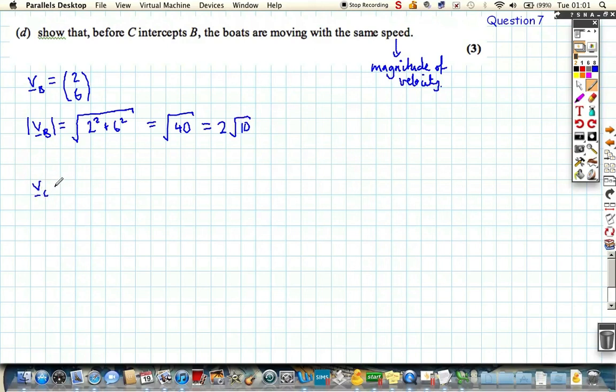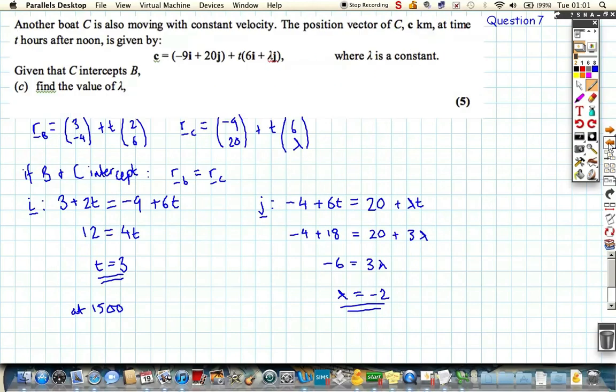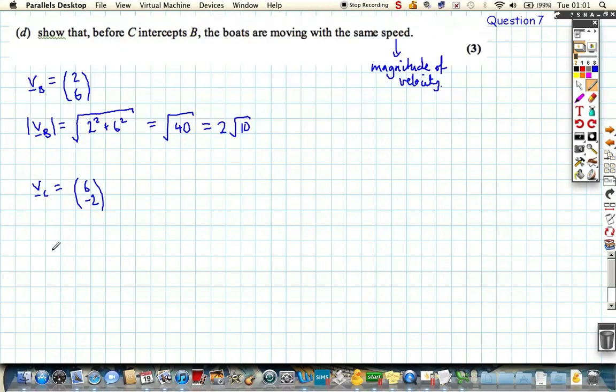And if we find, if we look at the velocity of C, we know that that was 6 minus 2, and the reason we know that was because lambda is minus 2, so it's 6 minus 2. Let's find the magnitude of the velocity, again, using Pythagoras, we've got 6 squared, and you can see what's going to happen already, hopefully, minus 2 squared, and it's important that we put that in brackets because then we get the root of 36 plus minus 2, or minus 2 squared is 4, so we get root 40, which is equal to 2 root 10. And there we are, we've finished the question.